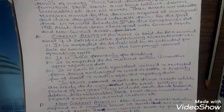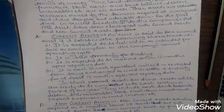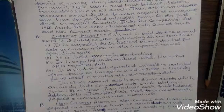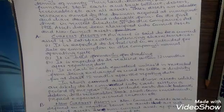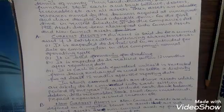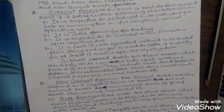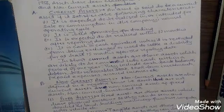It is cash or cash equivalent unless it is restricted from being exchanged or used to settle a liability for at least 12 months after the reporting time. In short, current assets are those assets which are likely to be converted into cash within a period of 1 year.